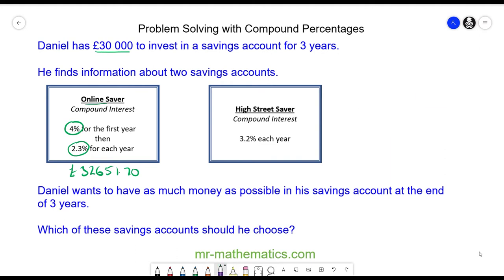With the high street saver we have 103.2% of the investment every year. As a multiplier we divide by 100 and get 1.032. Because we're doing it for three years, we raise it to a power of three.